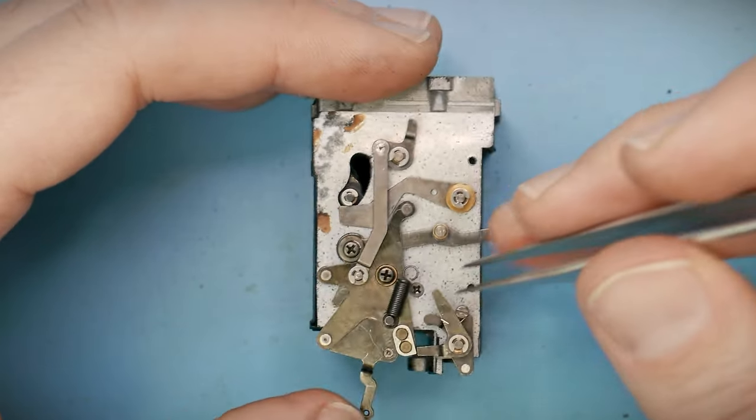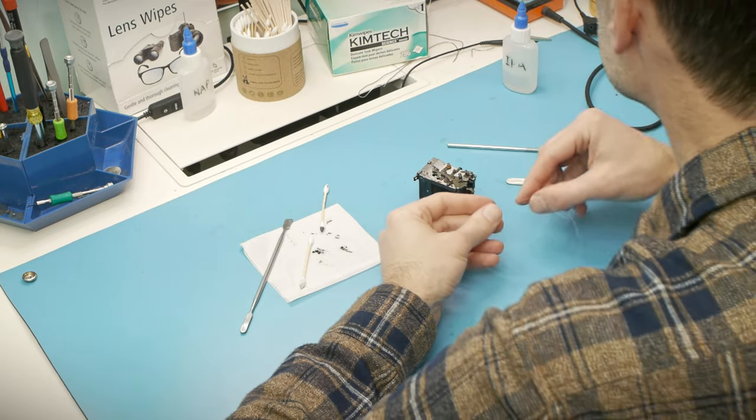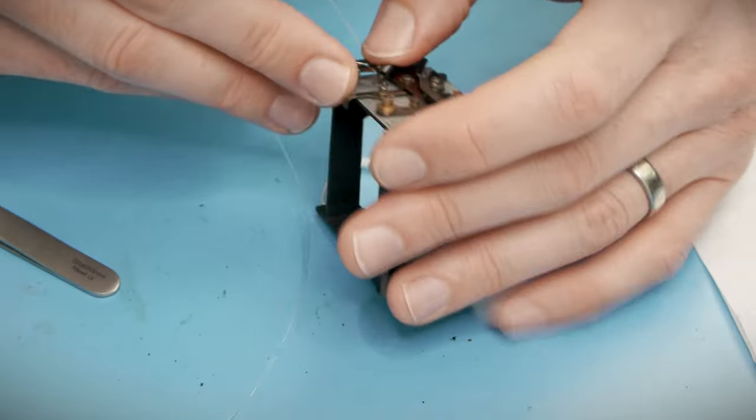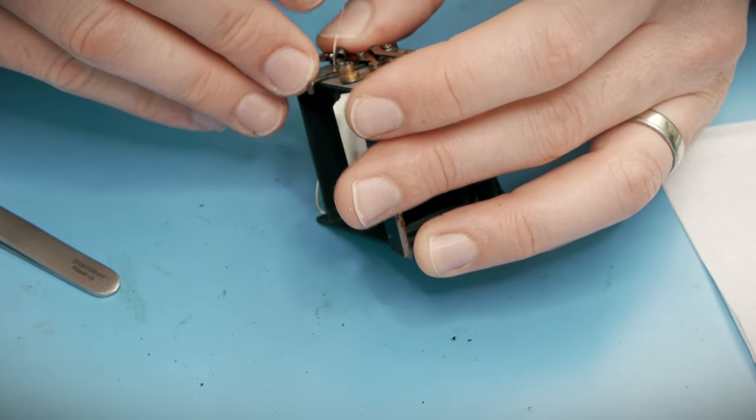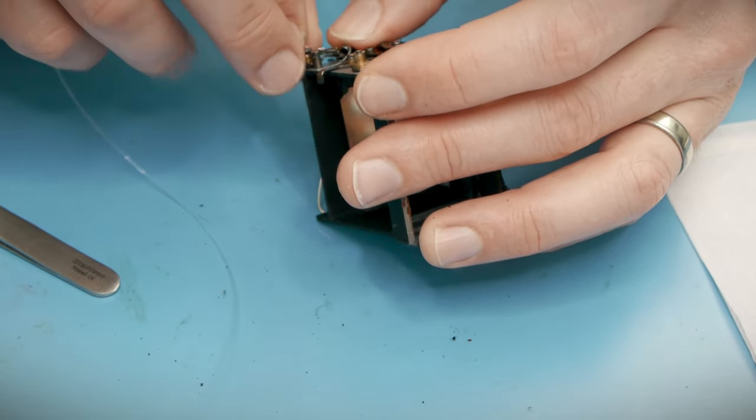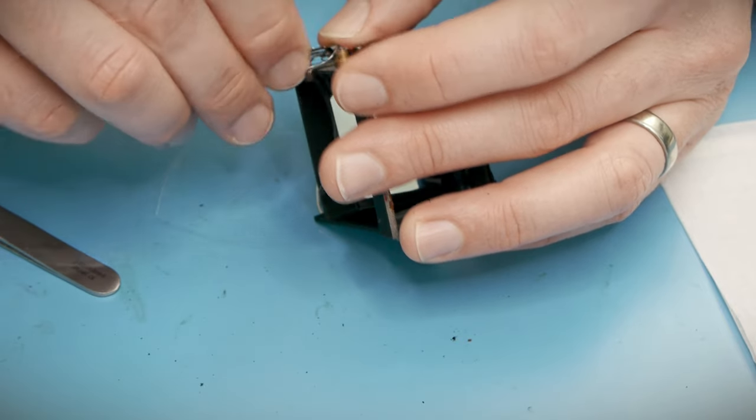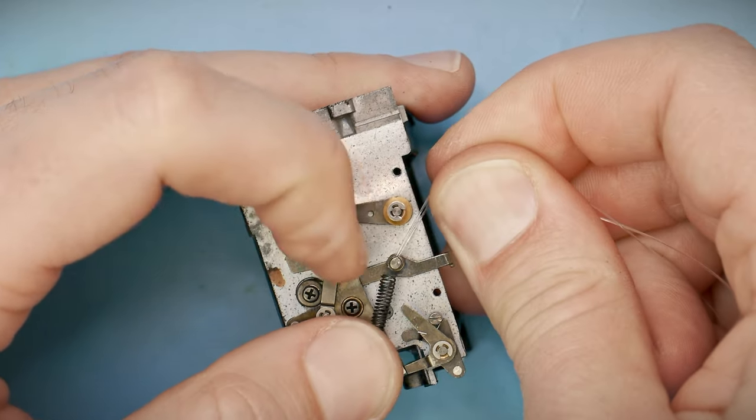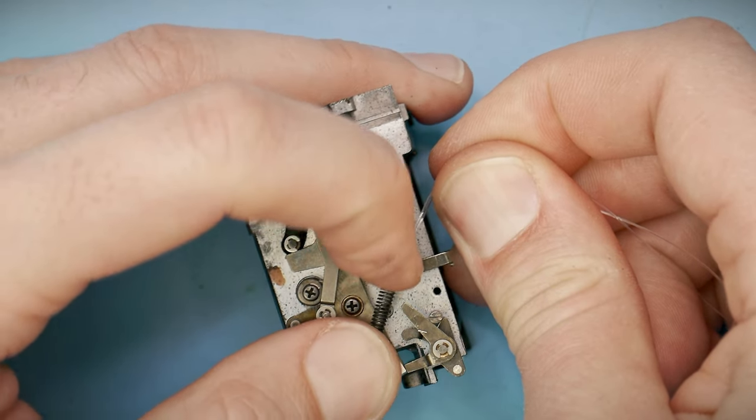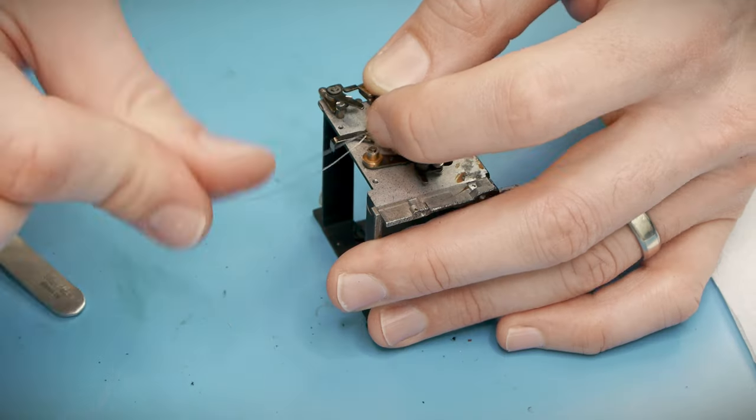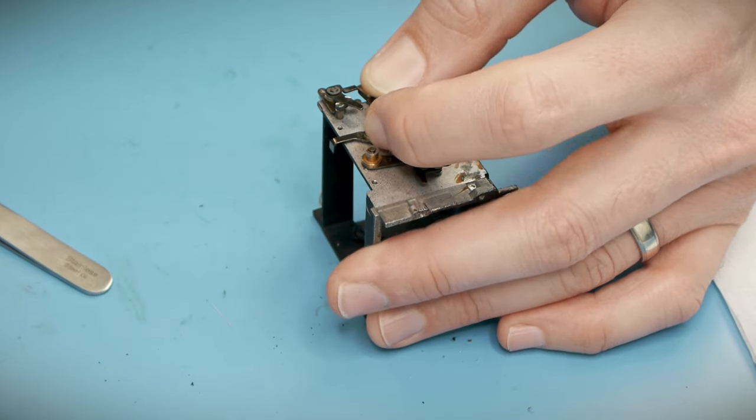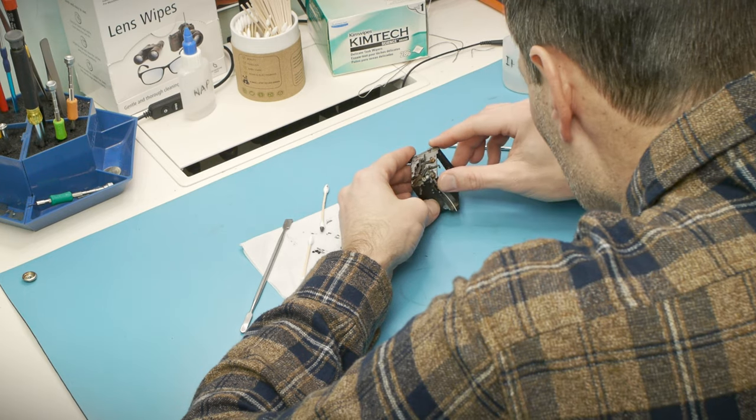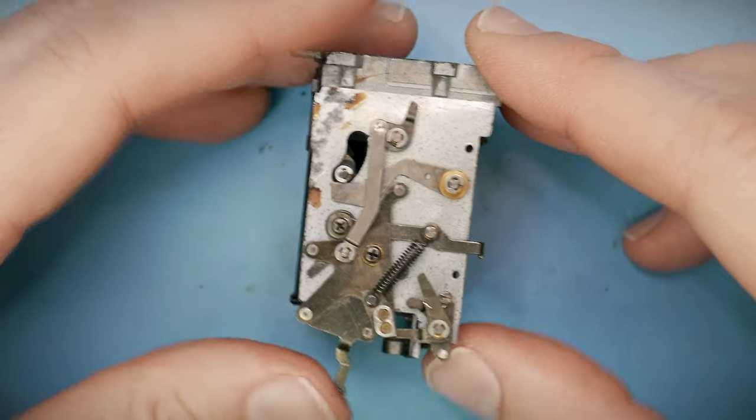I have one last spring to connect. I find a little piece of string or fishing line can really help with this. I thread the line through the hook on the end of the spring, and then use it to pull the hook over the retention post. Once in place, I can pull out the line. There we go. I used to struggle through this with my tweezers because it was way too easy for the spring to slip out of the grip. It drove me nuts. The string provides a lot more control over the entire process.